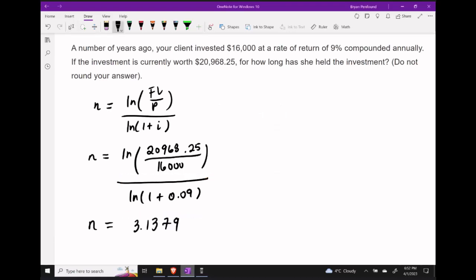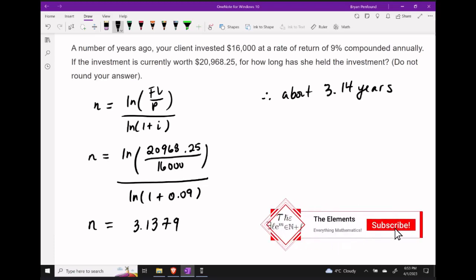And we get that N should be about 3.1379. Since our frequency number is 1, our original rate was compounded annually, this means that N represents years. In other words, the investment has been held for about 3.14 years.